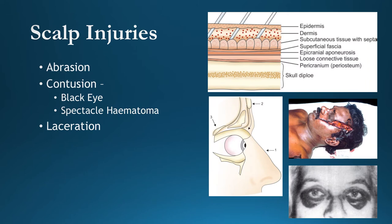The scalp consists of epidermis, dermis, and subcutaneous tissue — three layers belonging to the skin. At the subcutaneous layer, blood vessels are present; damage here causes bleeding. Below that are the superficial fascia, epicranial aponeurosis, loose connective tissue, pericranium, and finally the skull diploë. Damage to these layers from external force constitutes scalp injuries.